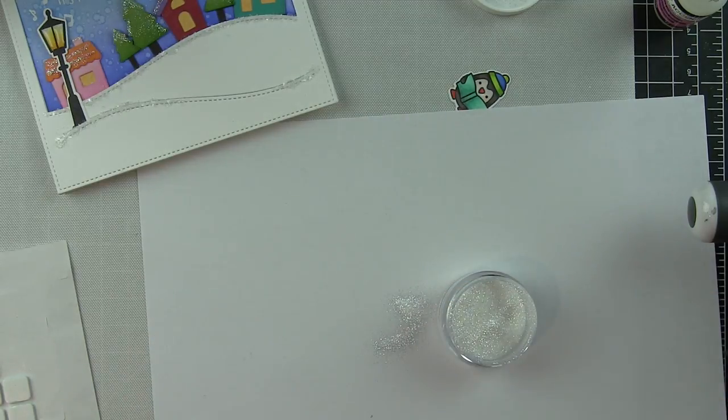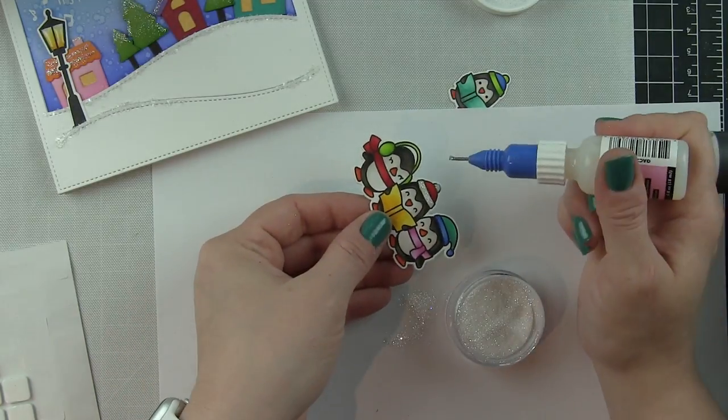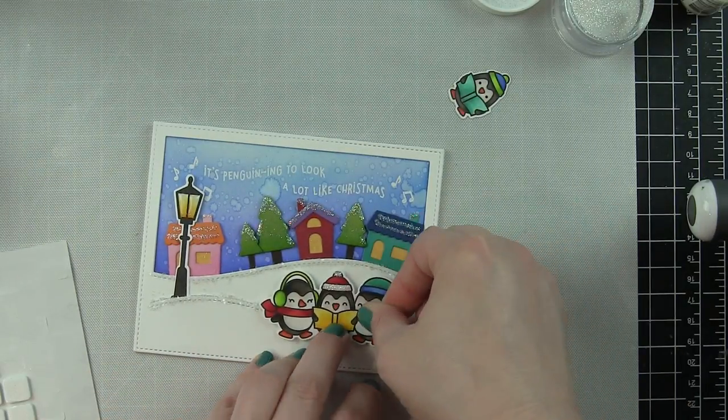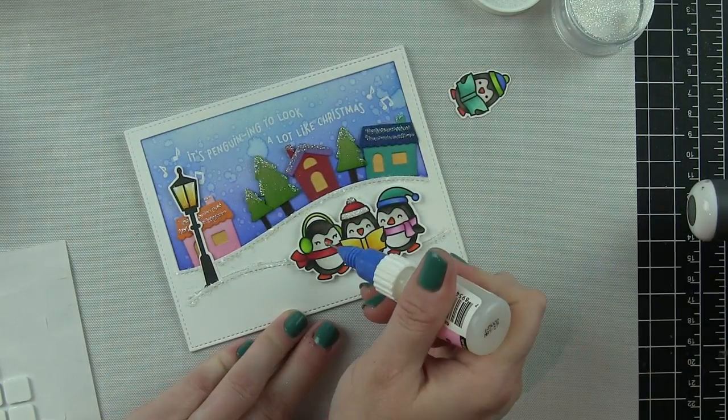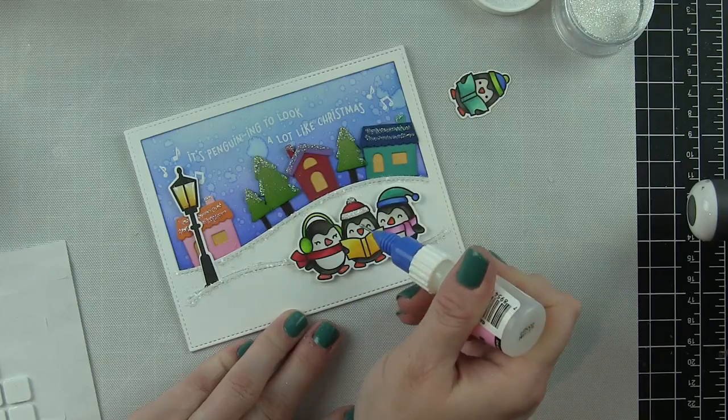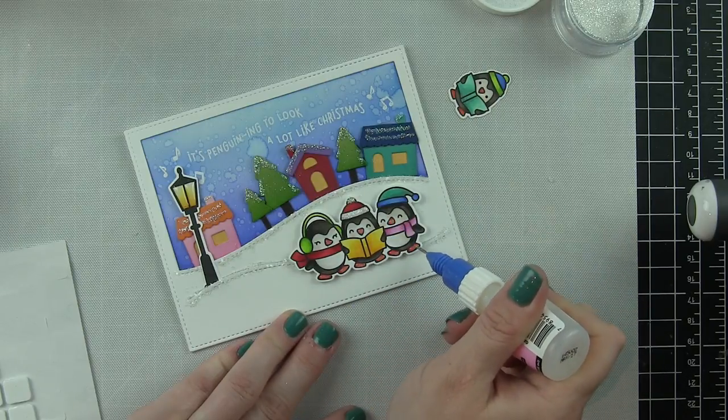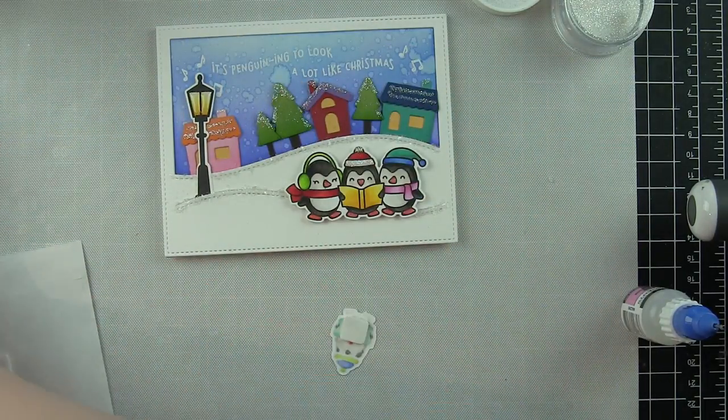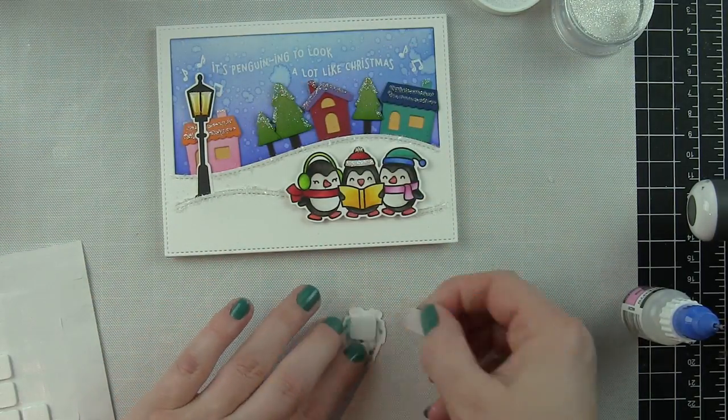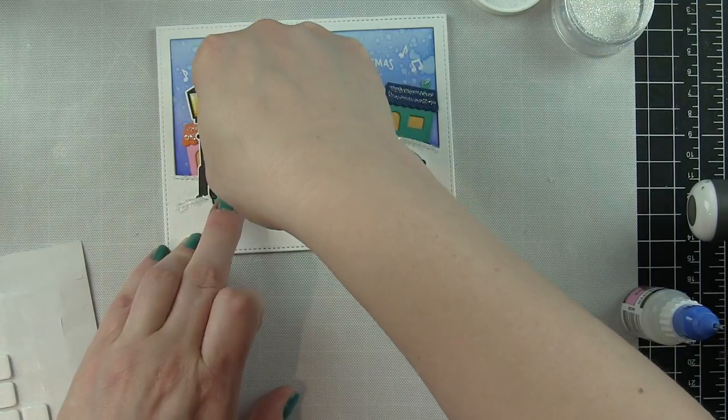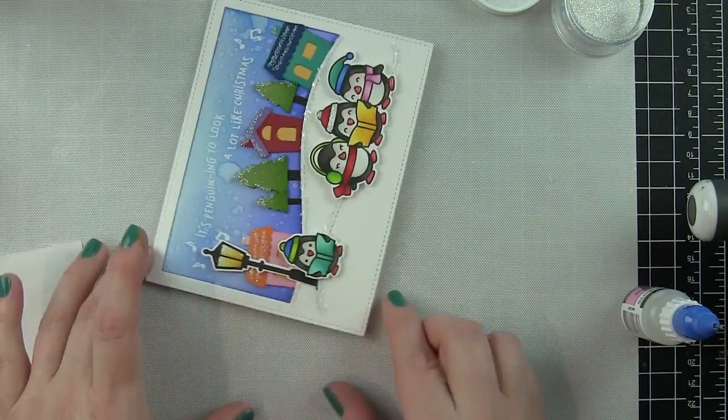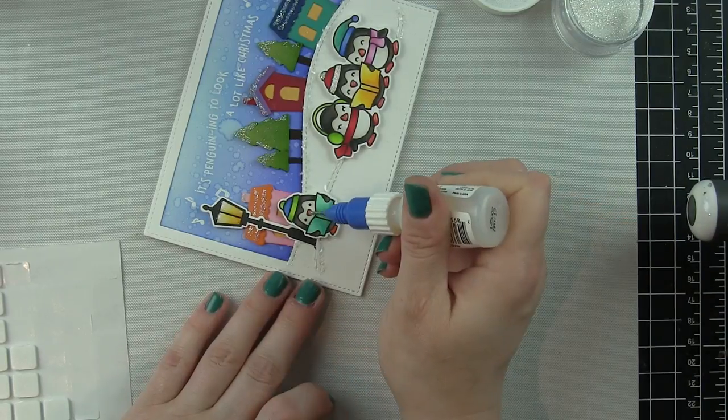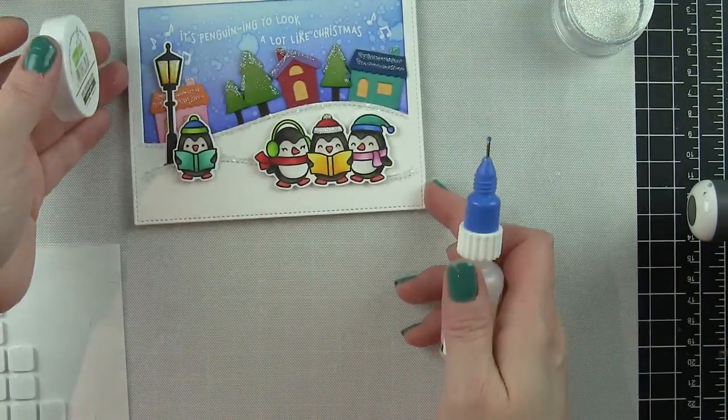On the middle penguin stocking cap, I added glue to the brim and the pom-pom. And this is where I'm going to sprinkle Prismaglitter on that to make it a little glittery. And add glossy accents to the penguins' noses and feet so that they're glossy. I will do the same thing to my remaining penguin, who I'm going to tuck over here next to the light post. Add glossy accents to his nose and feet.